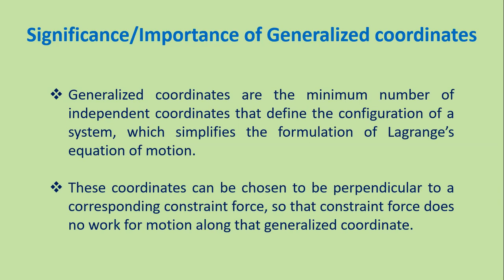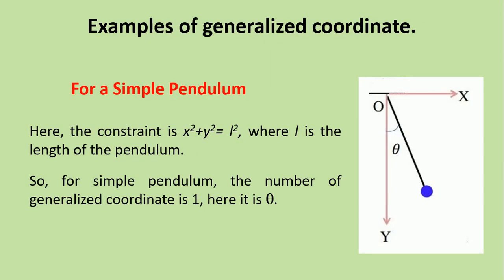One more important advantage: if someone chooses a generalized coordinate perpendicular to the corresponding constraint force, the constraint force does no work for motion along that generalized coordinate, which makes it easier to calculate the equation of motion of that particle.